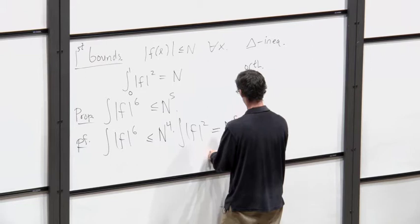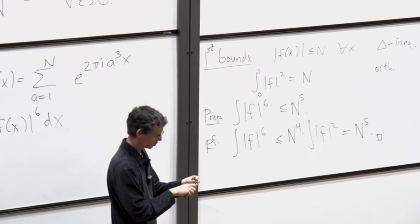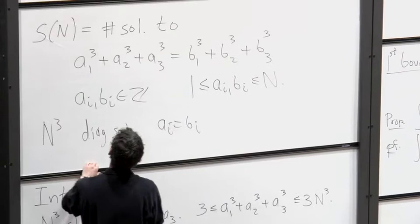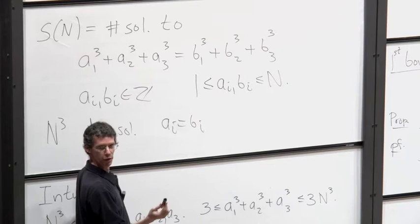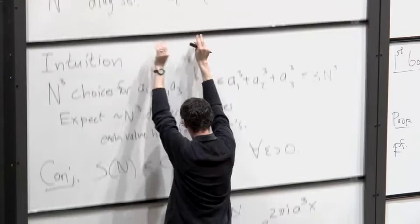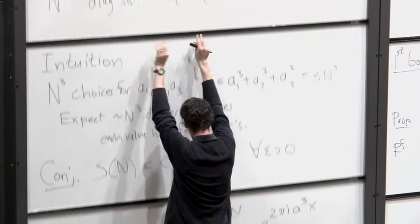It's worth noting this is not a very interesting bound for our original problem. There's a trivial proof that S(n) ≤ n⁵: there are n⁵ ways to choose a₁, a₂, a₃, b₁, b₂, and for each of those choices there is at most one value of b₃ that solves the equation. So we proved it in a convoluted way and have not yet done anything interesting.